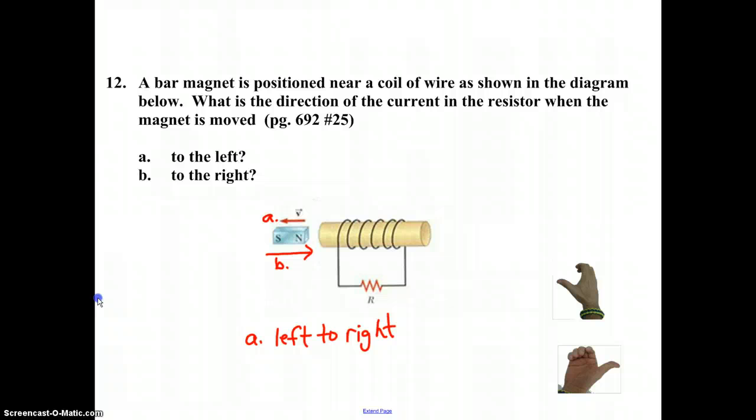Repulsion would oppose an approaching north pole. And so this would induce a current such that the magnetic field it produces would be north closest to the magnet and south furthest away from the magnet. Once again, we now right-hand rule.